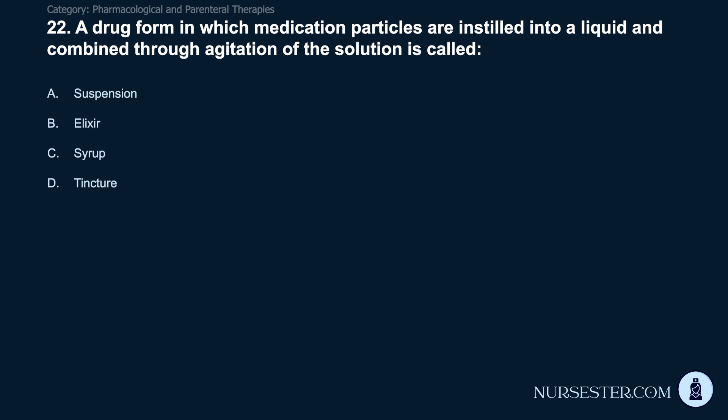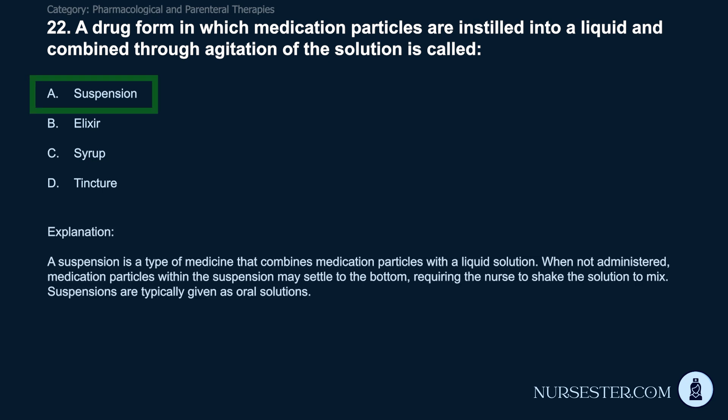Question 22: A drug form in which medication particles are instilled into a liquid and combined through agitation is called: A) suspension. B) elixir. C) syrup. D) tincture. Correct answer: A. Suspension. A suspension combines medication particles with a liquid solution. When not administered, medication particles may settle to the bottom, requiring the nurse to shake the solution to mix. Suspensions are typically given as oral solutions.